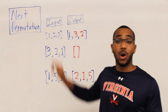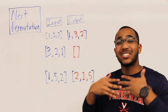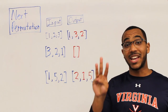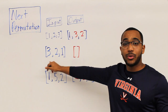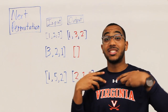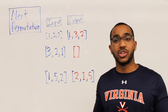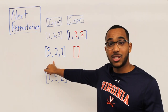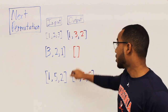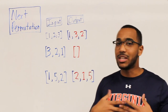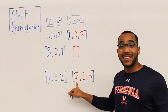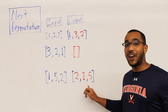If our sequence is 1, 2, and 3, the next permutation is going to be 1, 3, and 2. If I have 3, 2, 1 as my permutation, the next permutation is the first permutation, because this is the last permutation of the numbers 1, 2, and 3 — so we just return the empty array; there is no next permutation. For 1, 5, and 2, the next permutation is 2, 1, 5.